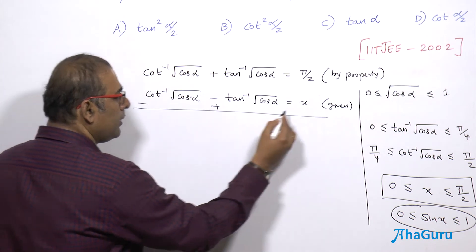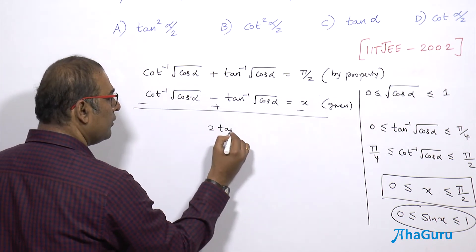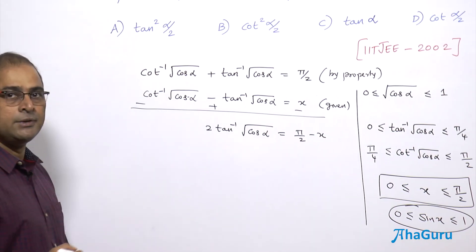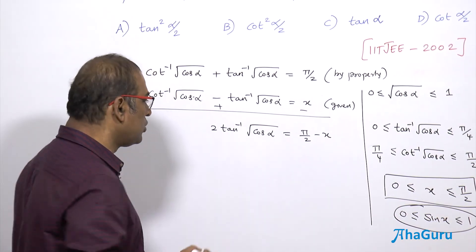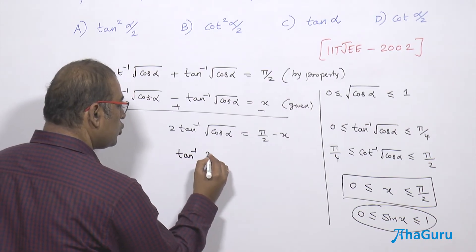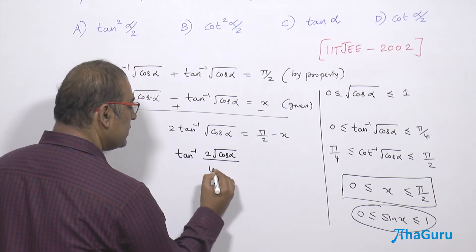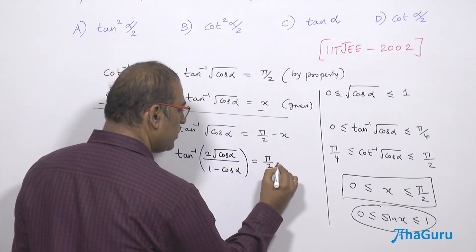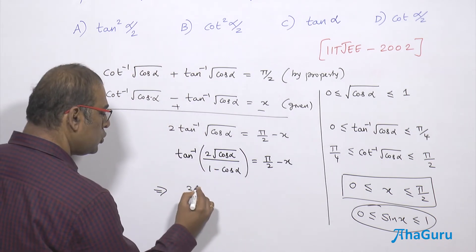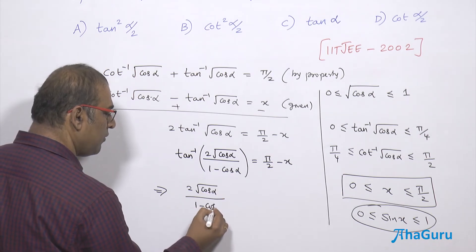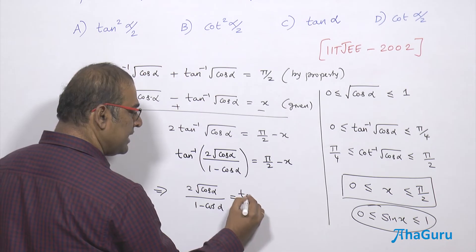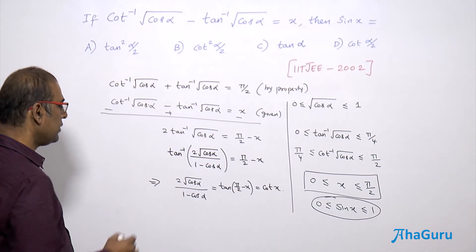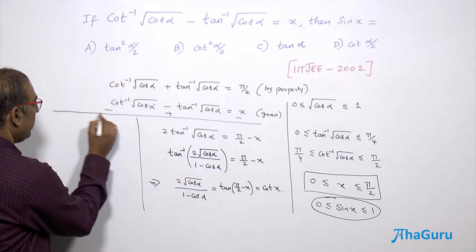Subtracting the given equation from the property equation, we get 2tan⁻¹(√cosα) = π/2 - x. By the double angle formula for tan⁻¹, this becomes tan⁻¹(2√cosα / (1 - cosα)) = π/2 - x. Therefore 2√cosα / (1 - cosα) = tan(π/2 - x) = cot x.